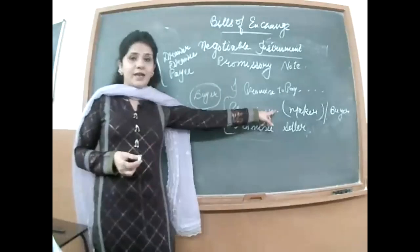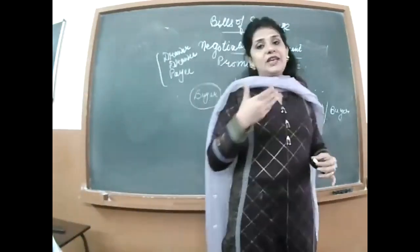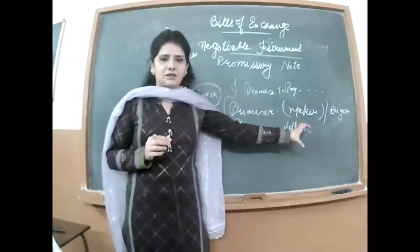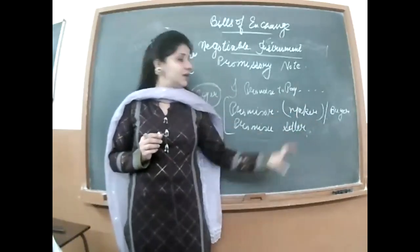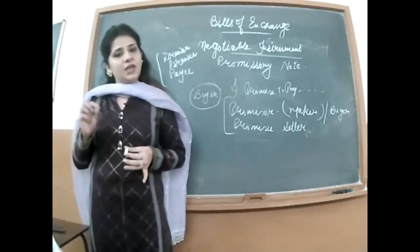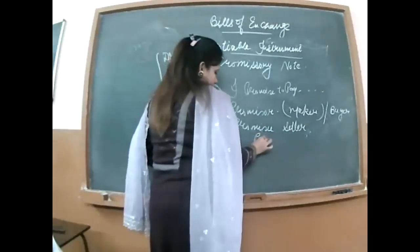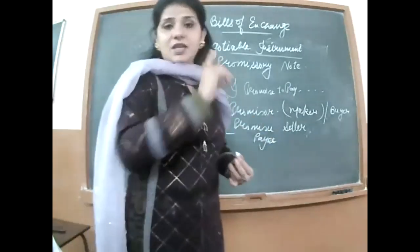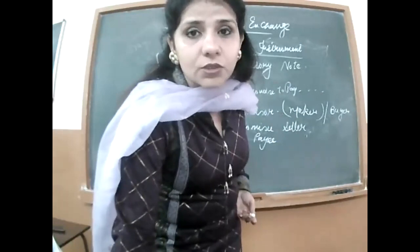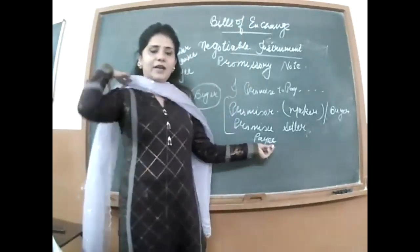Fourth, it must be signed by the maker — the person who is promising must sign at the bottom. Fifth, the maker must be certain — not a dummy person but a real existing human being, or even an artificial person like a company whose directors sign on its behalf. Sixth, the promise must be to pay a certain sum of money — the buyer specifies how much he will pay.